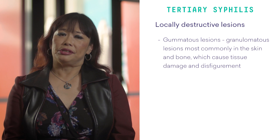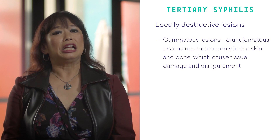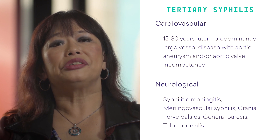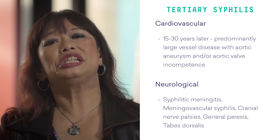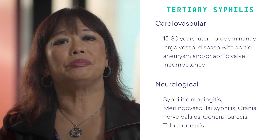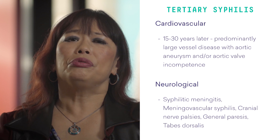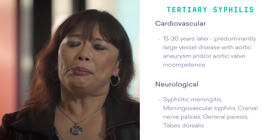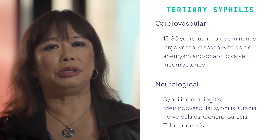Tertiary syphilis involves locally destructive lesions. There are gummatous lesions — granulomatous lesions most commonly in the skin and bone — which can cause tissue damage and disfigurement. Cardiovascular tertiary syphilis occurs 15 to 30 years later and involves predominantly large vessel disease with aortic aneurysms and/or aortic valve incompetence. Neurological syphilis involves syphilitic meningitis, meningovascular syphilis, cranial nerve palsies, general paresis, and tabes dorsalis.